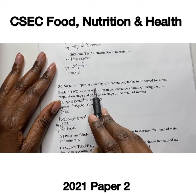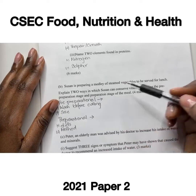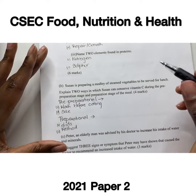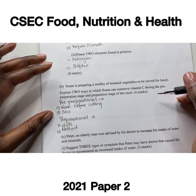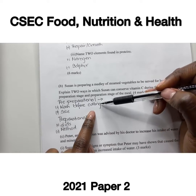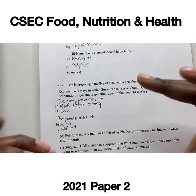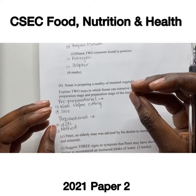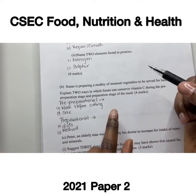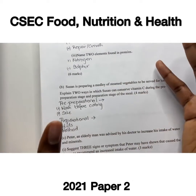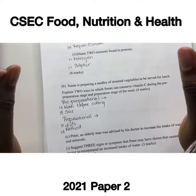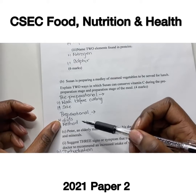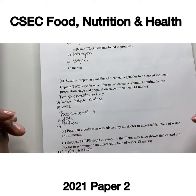Part B: Susan is preparing a medley of steamed vegetables for lunch. Explain two ways to conserve vitamin C during pre-preparation and preparation. In the pre-preparation stage, wash the vegetables before cutting to retain as much vitamin C as possible. Also, cut vegetables into larger pieces so as not to destroy the cell wall. During preparation — steaming or blanching — use a small amount of water to reduce vitamin C loss, and keep the lid closed to prevent evaporation or leaching of vitamin C.